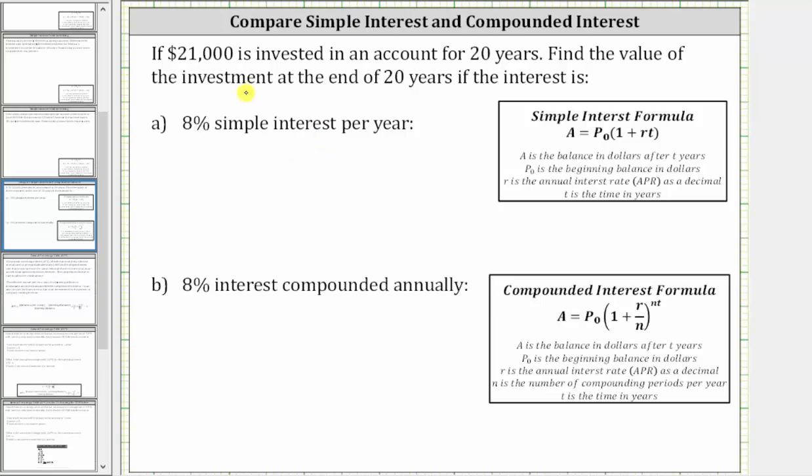For the simple interest formula, P sub zero is $21,000. R is 8%, which must be expressed as a decimal. 8% is equal to 0.08 and T, the time in years, is 20.